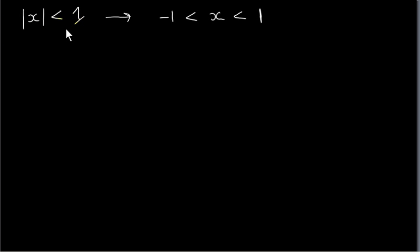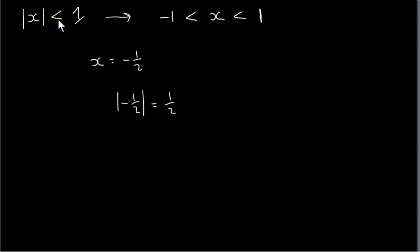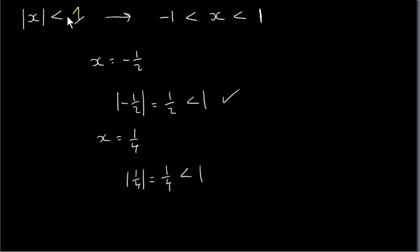Let's look at this modulus inequality: the modulus of x is less than one. That actually means that x lies between minus one and plus one. For example, if x is minus a half, then the modulus of minus a half is plus a half, and plus a half is indeed less than one — that checks out. If x equals a quarter, then the modulus of a quarter is plus a quarter, which is less than one. So x is any number that lies between minus one and plus one.